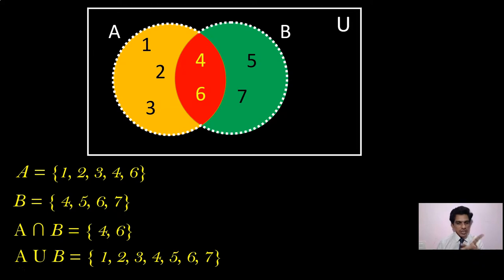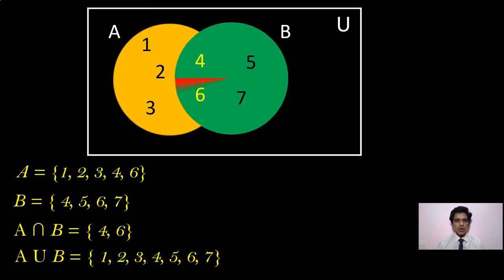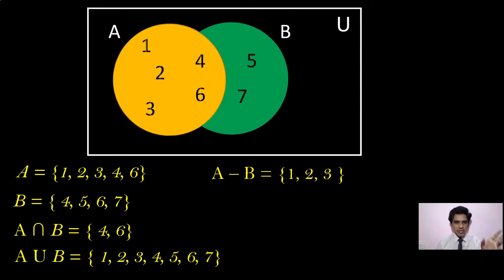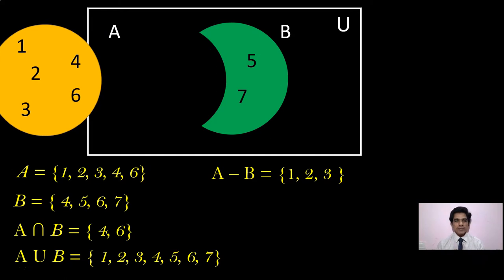We have also learned the difference of sets. A minus B means those elements which are in A but not in B — you remove B from A. What is left in A is 1, 2, 3 — that is A minus B. Similarly for B minus A: remove A from B. B has {4, 5, 6, 7} and the common part with A is 4 and 6. So removing A from B, we are left with 5 and 7 — that gives us B minus A.